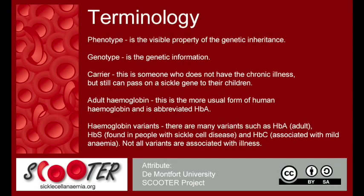So here's just some terminology to get you started. When we talk about genetic phenotype, these are the visible properties of that genetic inheritance. Someone with the phenotype that results in sickle cell disease will have various clinical manifestations associated mainly with anemia and problems linked to that. The genotype is different — that's the genetic information behind the scenes, the terminology we use to express whether someone is healthy or has acquired a genetic trait.